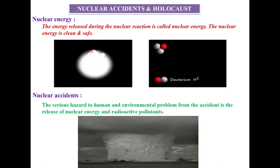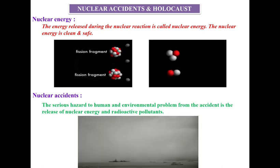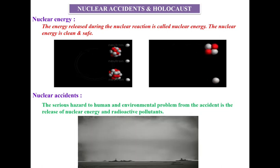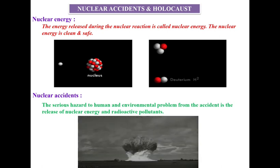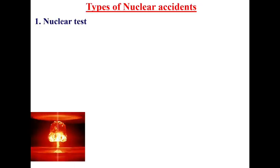Though these accidents result in such problems to our human community, we have to be very careful and aware about such things. Now, the types of nuclear accidents — I am going to explain five types. The first one is nuclear tests. Nuclear tests are considered a type of nuclear accident. The explosions are carried out underground, and after the explosion, radioactive materials settle down on the earth's surface or in the atmosphere as pollutants.